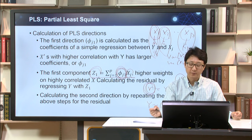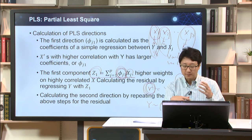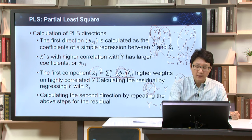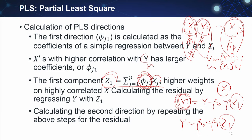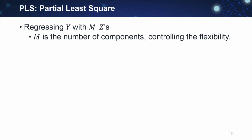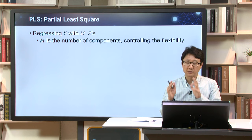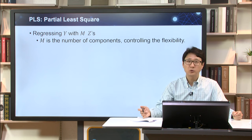Using this residual r, we repeat this step. Instead of y, we use r. We fit each x again, find the coefficients phi, and then find the second direction g2. We keep repeating these steps to find g1, g2, g3, and generally up to gp. Actual partial least squares uses the first m g's — m new directions — where m is the number of components. Each of m is the controlling parameter for flexibility. Using more g's means more variables, and the model becomes more complex.